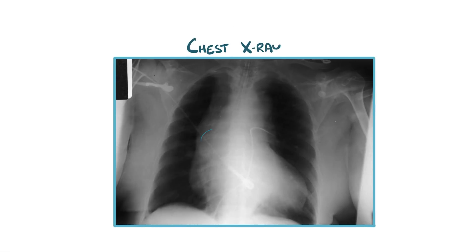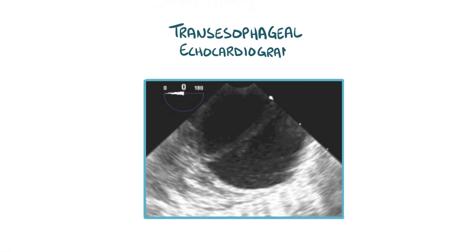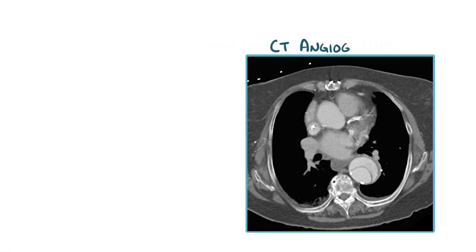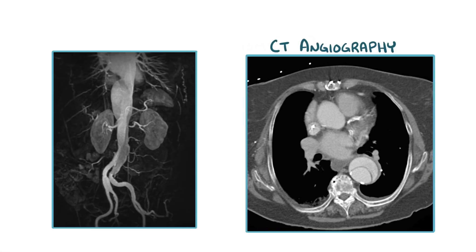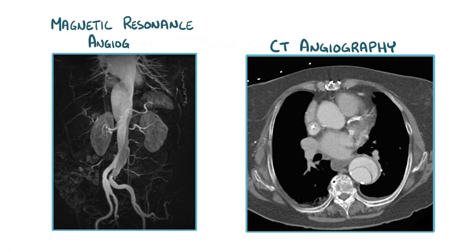On a chest x-ray, there's typically a widened aorta. More sensitive imaging techniques include a transesophageal echocardiogram, where an ultrasound probe is passed through the esophagus to obtain a clear picture of the aorta, as well as CT angiography and magnetic resonance angiography, both of which look closely at the blood vessels.